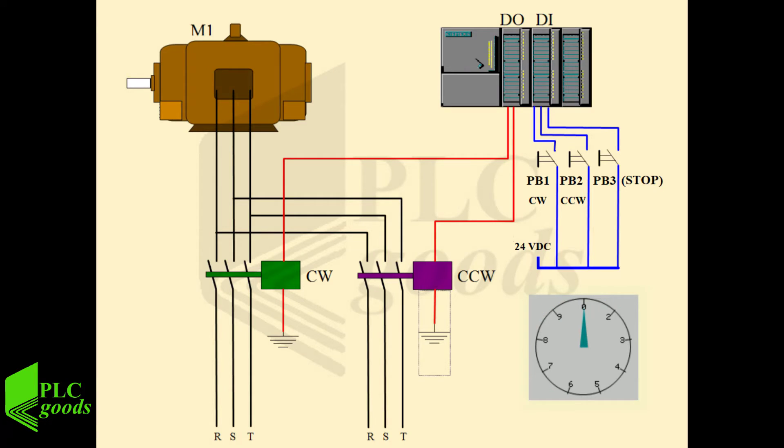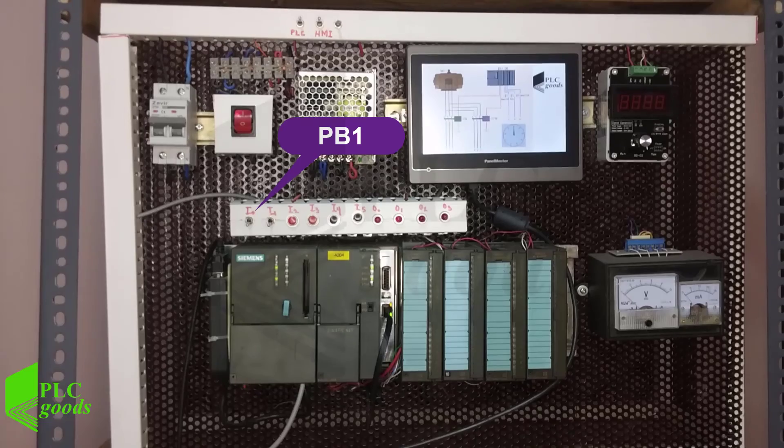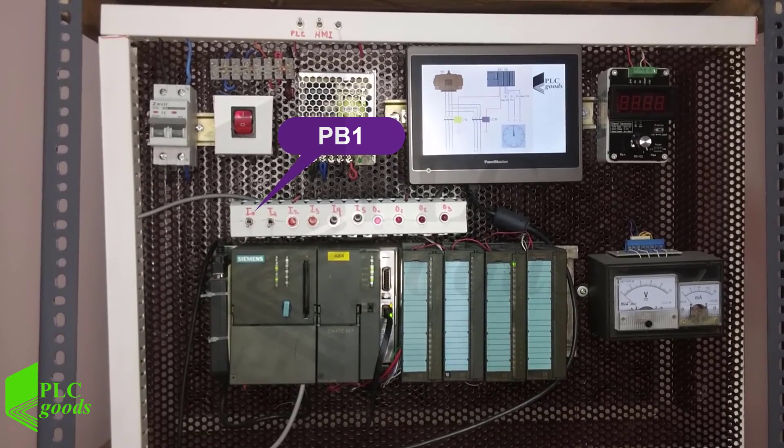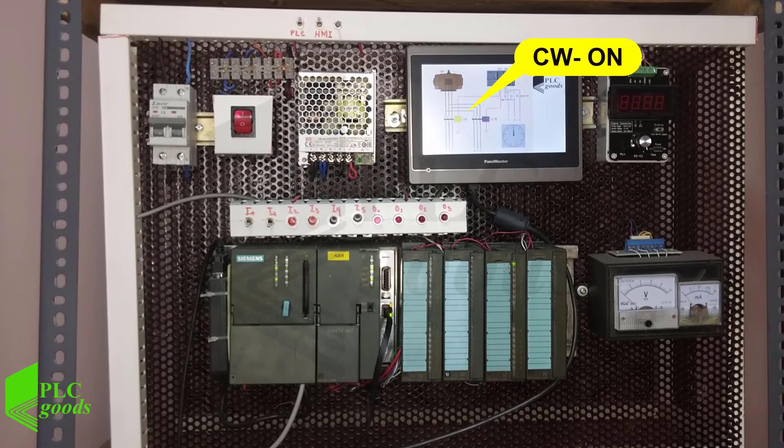Let's go ahead and run the program. I depress PB1. CW contactor turns on. Its color goes from green to yellow.